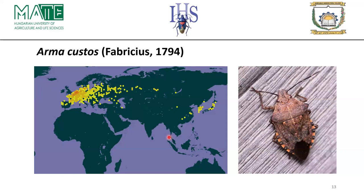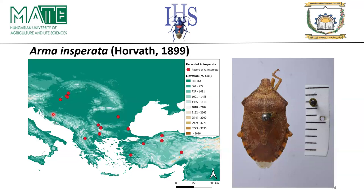Arma custos is known by its black punctuation and dark coloration, and is mainly found in the Palearctic region extending toward Korea and Japan. This image shows the geographical distribution of Arma custos. Arma inspirata is found in the western part of the Caspian Sea and the southeastern part of Europe.